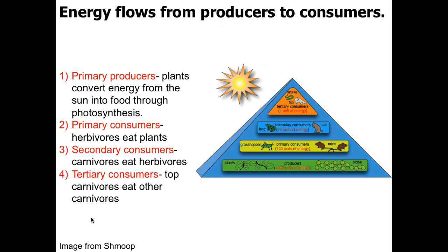Energy is going to flow in a similar manner regardless of what organisms are involved. The initial Sun is going to fuel all of the energy for the planet. It's going to be taken in by primary producers — these are plants generally — that perform photosynthesis and convert that solar energy into sugar or chemical energy that organisms on the planet can use.